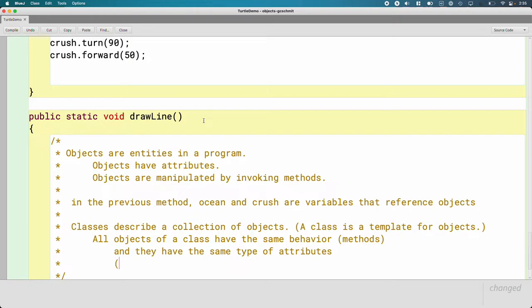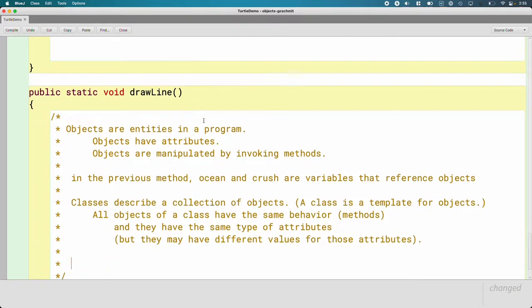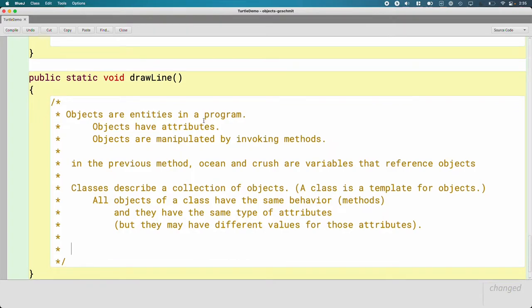All objects of the turtle class have a pen color, have a pen width, have a location, have an orientation. They have the same type of attributes. And this is the really important thing, though. But they may have different values for those attributes. So while all turtle objects have the same attributes, pen color, pen width, location, orientation, different turtle objects can have different values. One turtle object can have a red pen, another can have a green pen, one can be facing north, one can be facing west, one can have a pen width of five pixels, one can have a pen width of one pixel. Different objects can have different values for those shared attributes. That's really powerful.